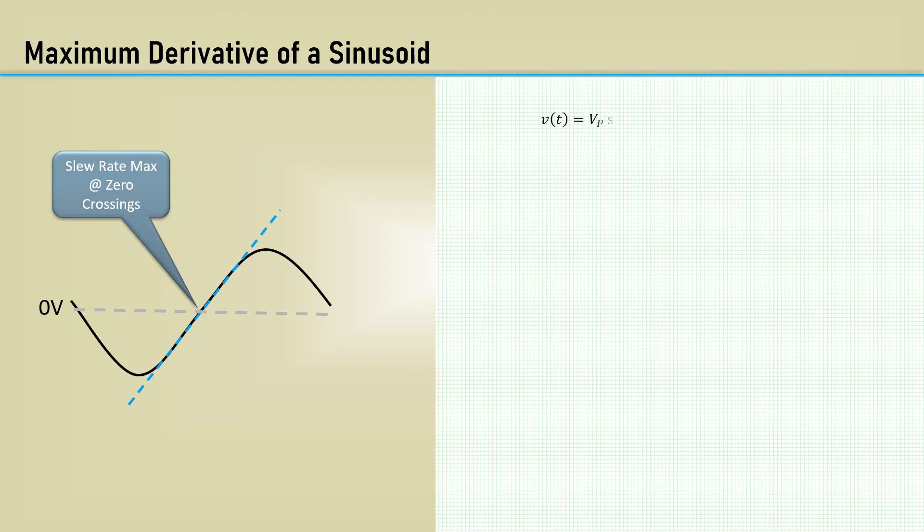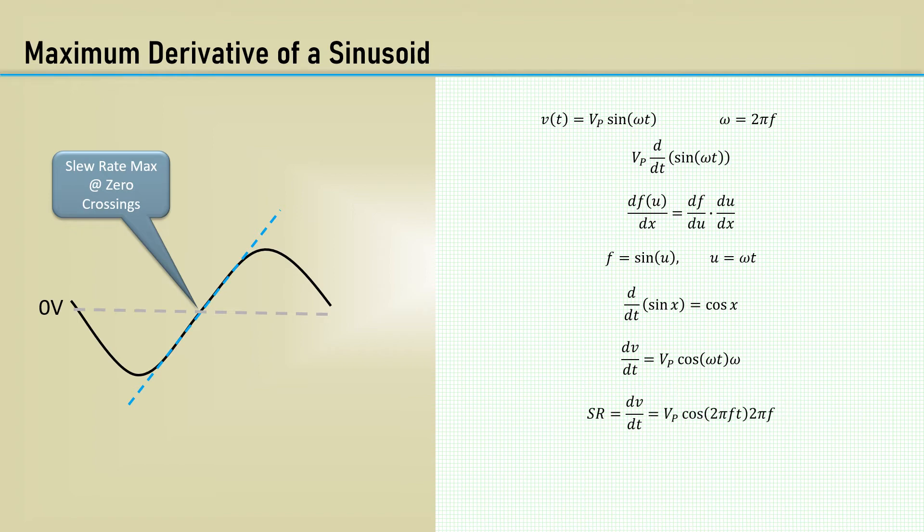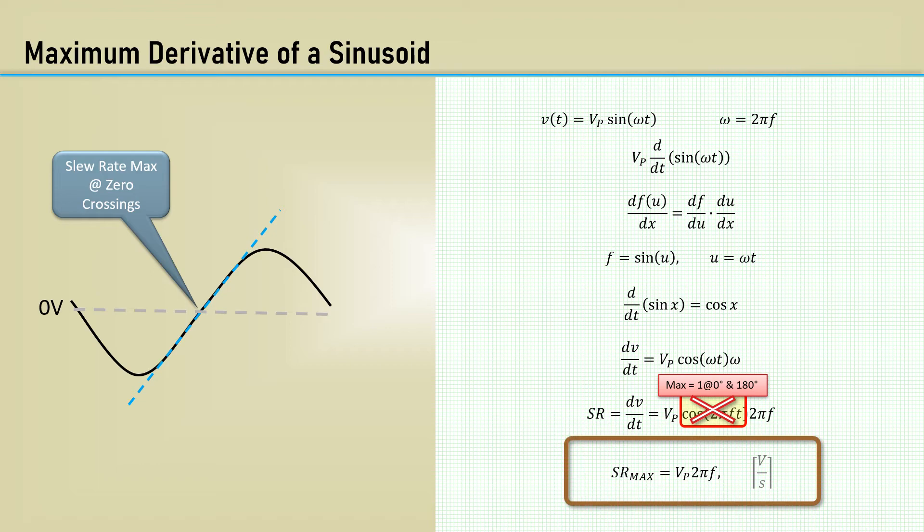Let's start with the equation of a sinusoid. We want to differentiate with respect to time, first moving the constant v sub p out to the left. We will use the chain rule on that puppy, and of course the derivative of sine of x is the cosine of x. That leaves us with this equation representing the derivative of a sine wave. If we are interested in the maximum rate of change, of course the cosine function is maximum or 1 at 0 and 180 degrees, so this part goes away. That leaves us with this simple equation for the maximum slew rate for a given peak voltage and frequency.